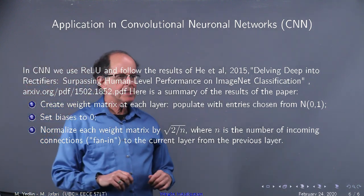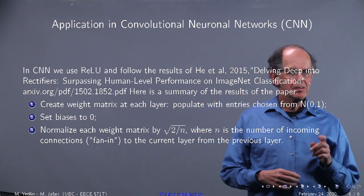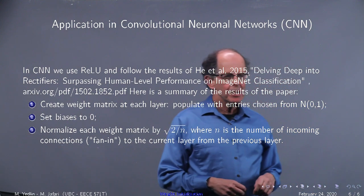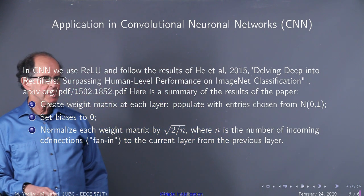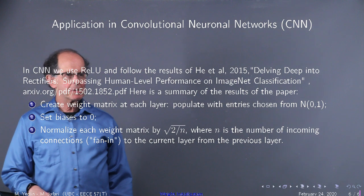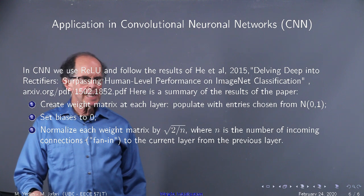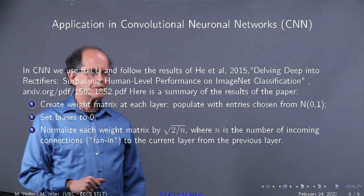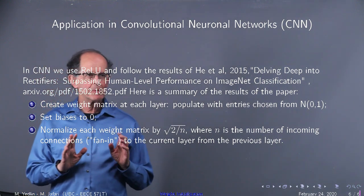Now let's apply this to convolutional neuronal networks, which we are going to look at later. We're going to follow the results of He et al 2015, references given, and there's the recipe. You create a matrix at each layer, populate with entries chosen from N(0,1), set the biases all to 0, normalize matrix by square root of 2 divided by n, where n is the number of incoming connections, known as the fan-in, to the current layer from the previous layer. The results are excellent for the normal ReLUs.